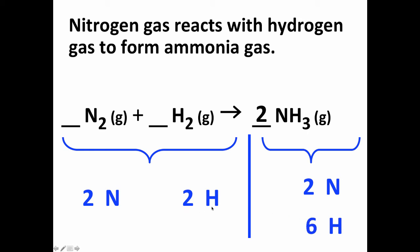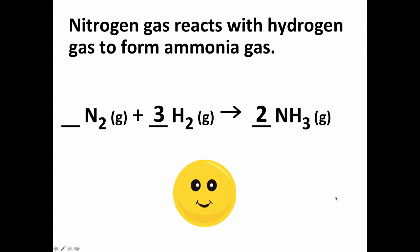which doesn't yet balance the two hydrogens we apparently start with, until we put a coefficient of three in front, and three times two gives us six. Two nitrogens, six hydrogens to start, same numbers of nitrogens and hydrogens to end. That is a correctly balanced equation, and everybody is happy.